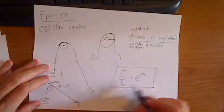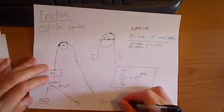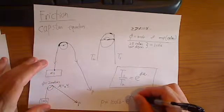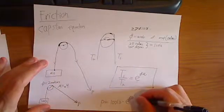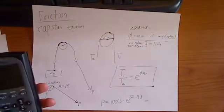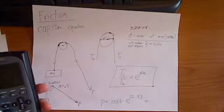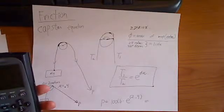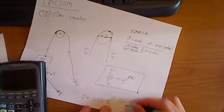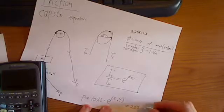You move T2 over to the other side. So, you have P equals 100 pounds times E to the 2 times 0.4. Equals 222 pounds. So, significantly more in this case.